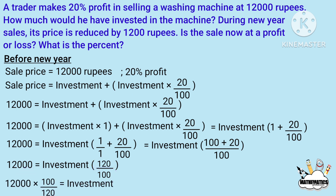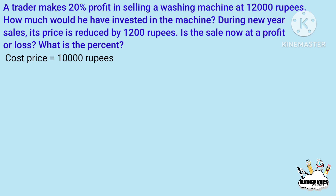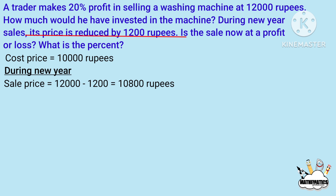So, 12,000 into 100 by 120 is equal to investment. This gives investment equal to 10,000. During the New Year sale, the selling price becomes 10,800 rupees.